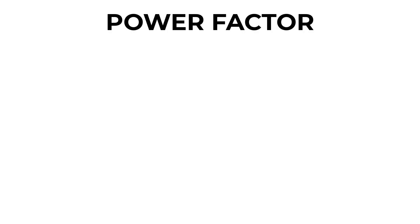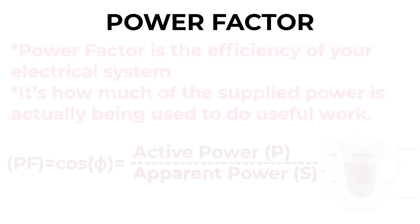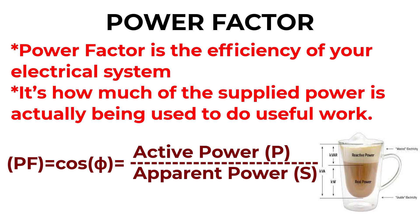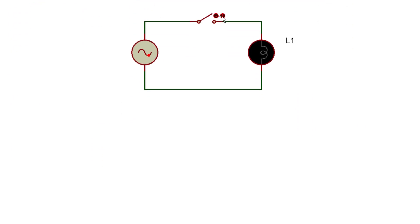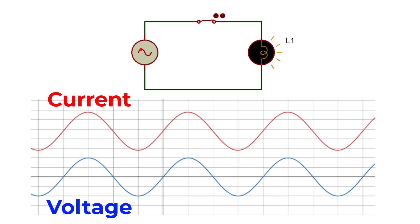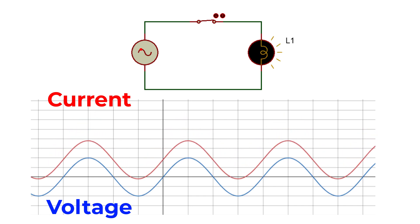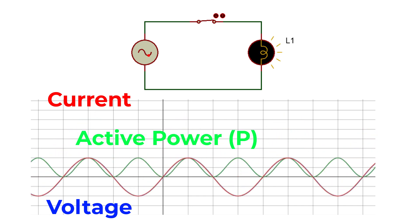Let's start by simplifying what you need to know about power factor. Power factor is the efficiency of your electrical system — how much of the supplied power is actually being used to do useful work. If your power factor is low, you are wasting energy. When a resistive load like a lamp is connected to an AC source, the voltage and current waveforms stay in phase. That's active power, or P — the real power used for useful tasks like lighting or running motors.